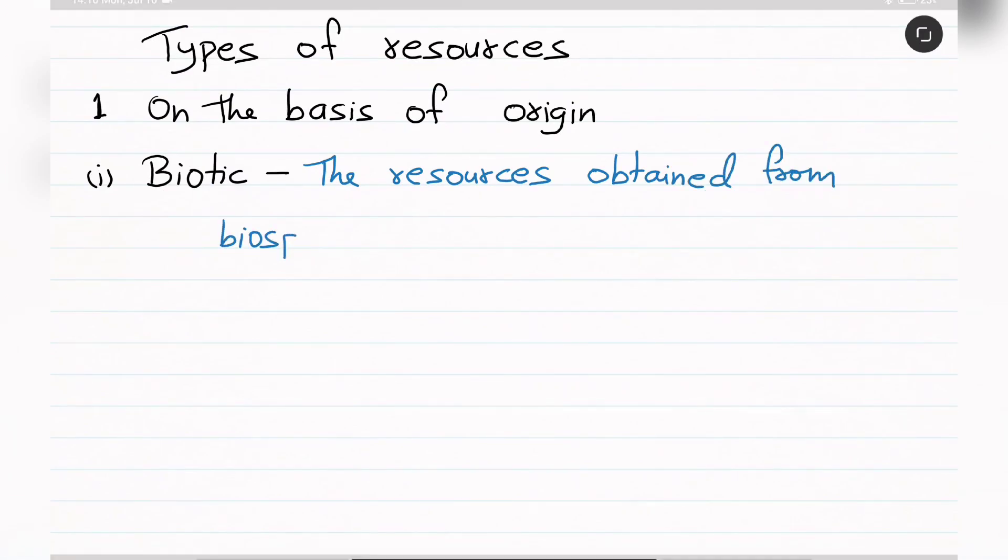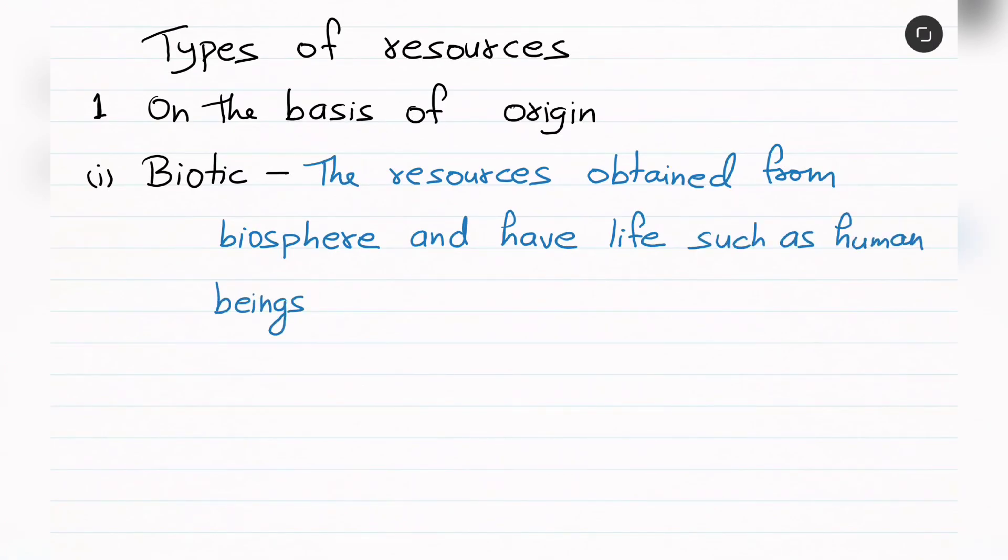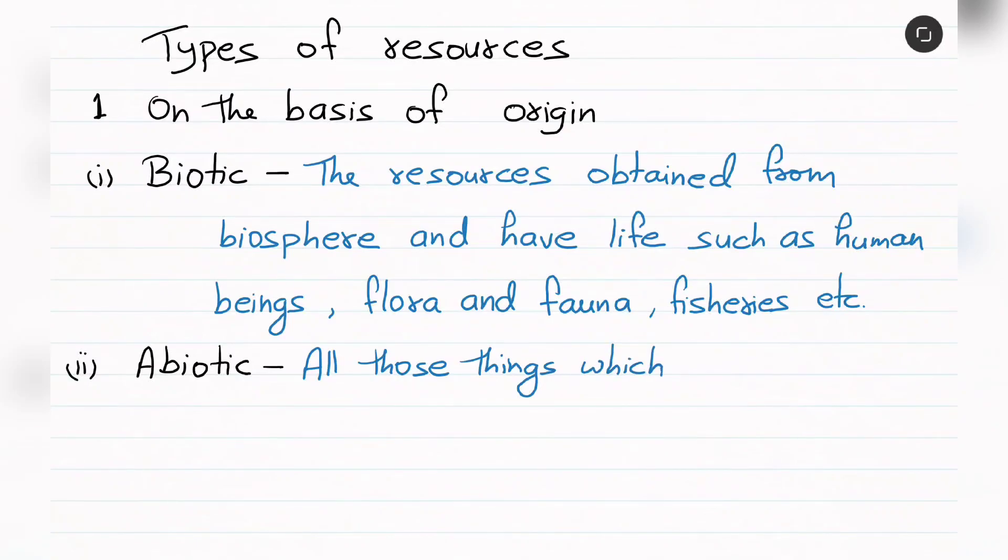On the Basis of Origin, resources can be classified as biotic and abiotic. First, biotic: the resources obtained from biosphere and have life, such as human beings, flora and fauna, fisheries, etc.